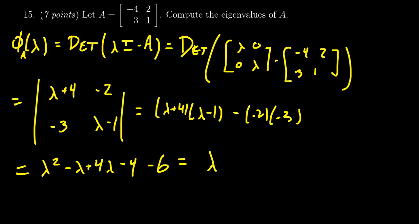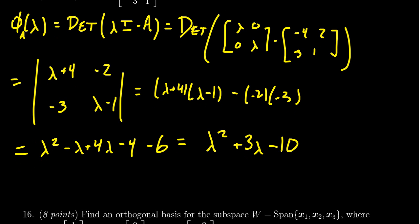So combining like terms we get λ² + 3λ - 10. In that situation, we need factors of -10 that add to be 3, so we can factor this as (λ + 5)(λ - 2).